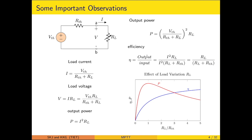The efficiency, which is output power upon input power, is I squared RL divided by the total input from the source going to RL and the Thevenin resistance. This comes out to be RL divided by (RL plus RTH). This efficiency term is analogous to the voltage expressed as a percentage of the Thevenin voltage.